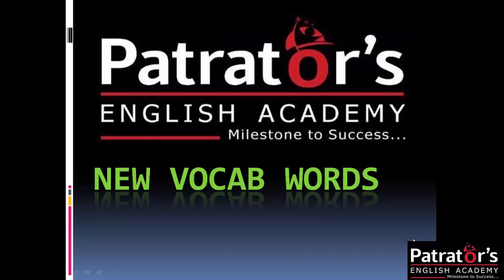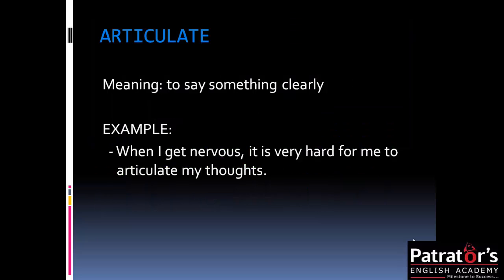Hello friends, welcome to Petraeters English Academy. Today we are going to discuss some new vocab words which will help you to improve your English. Our first word is 'articulate,' which means to say something clearly. I have written an example for you so that you can understand how to use this word in a sentence: 'When I get nervous, it is very hard for me to articulate my thoughts.'